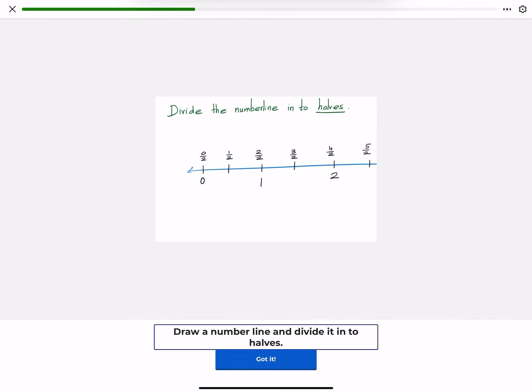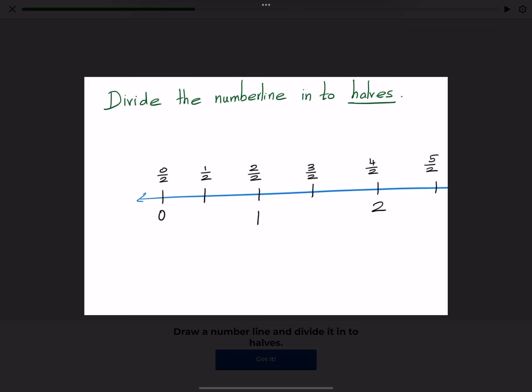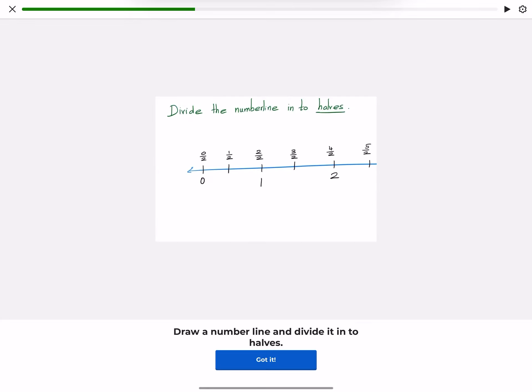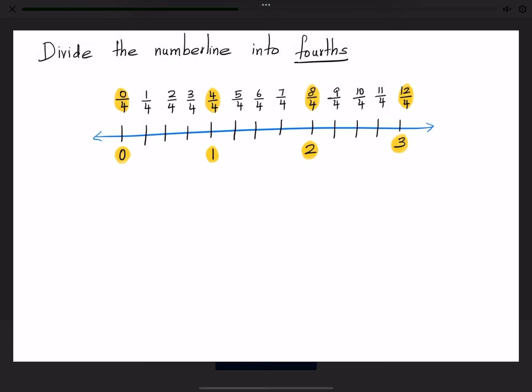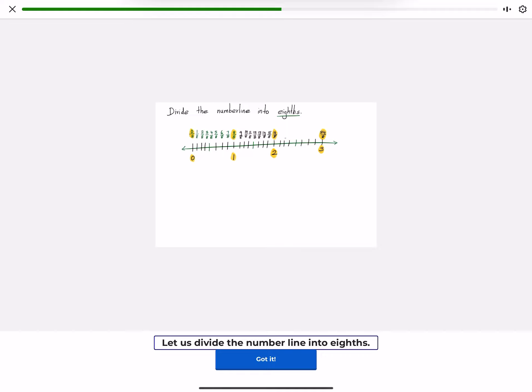Draw a number line and divide it into halves. Draw a number line and divide it into fourths. Let us divide the number line into eighths.